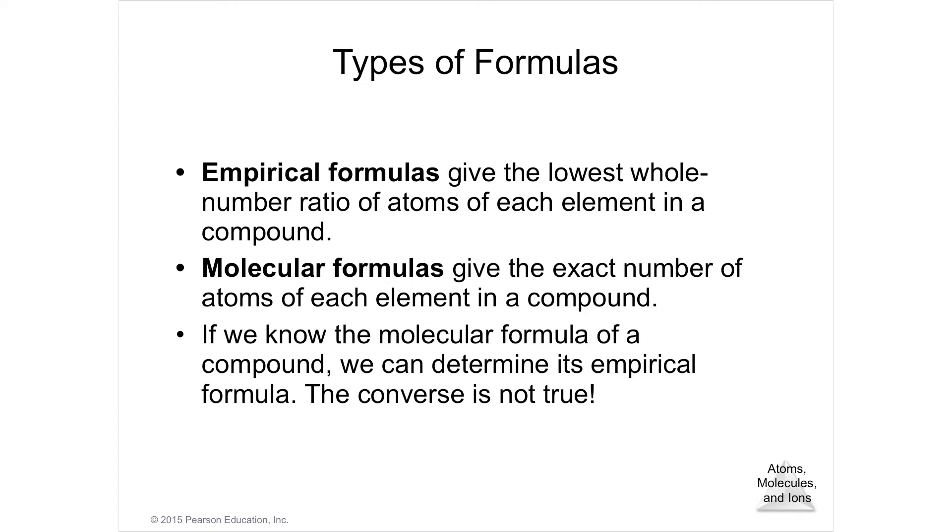There are several different types of formulas. Let's look at molecular first. A molecular formula gives the exact number of atoms of each element in a compound. So if you were to have sugar, sugar here is C6H12O6. This is only one form of sugar. It's sucrose.